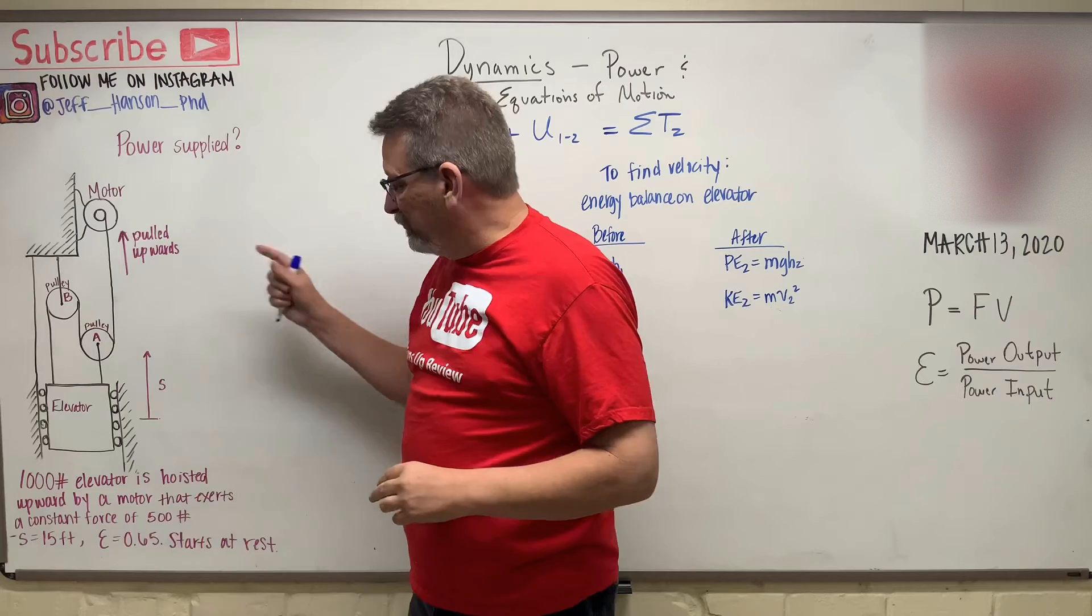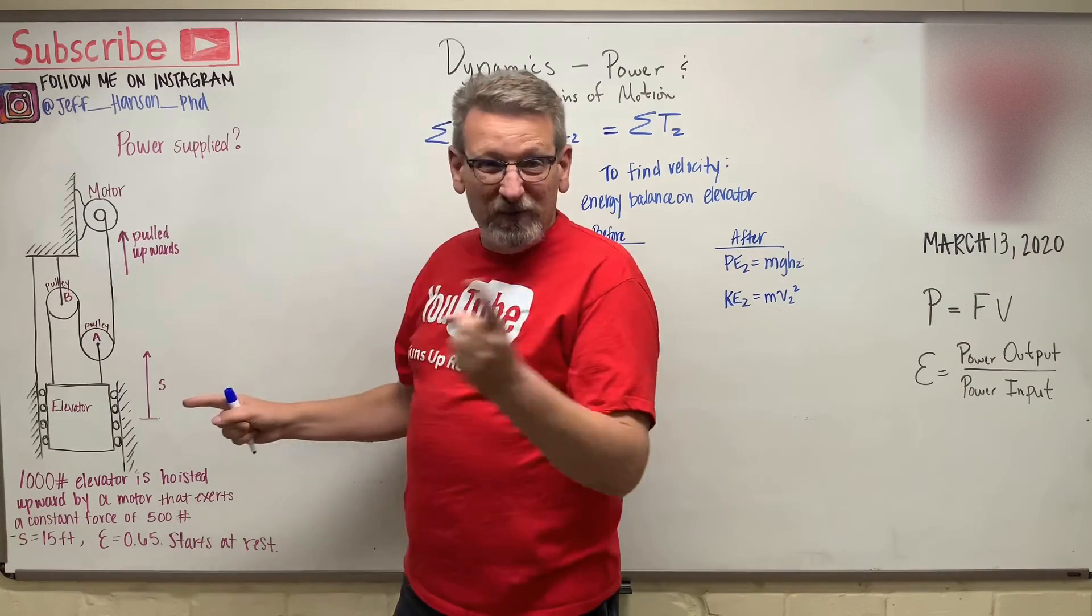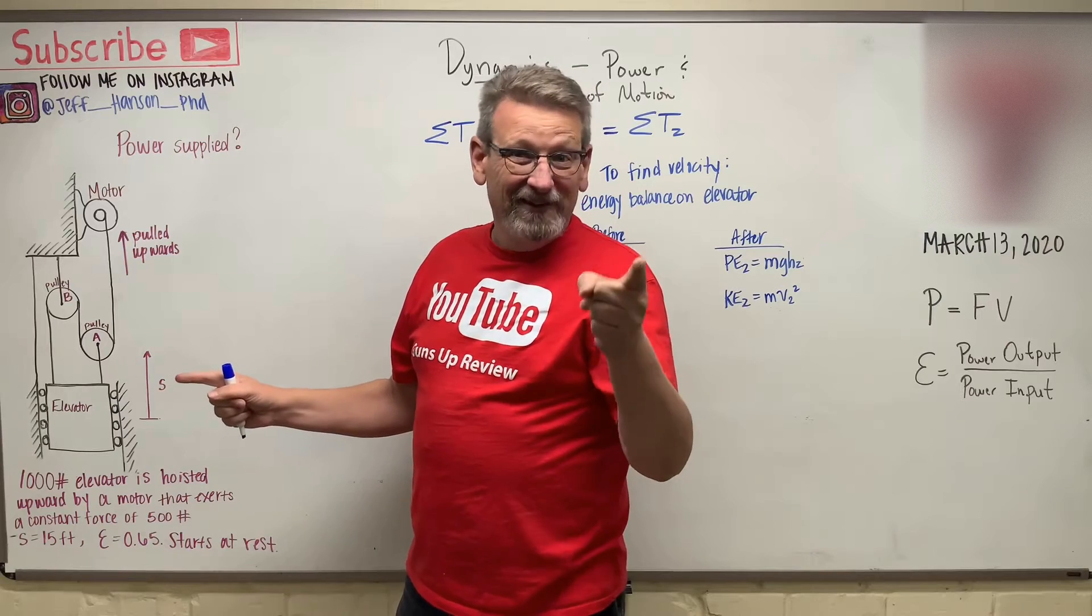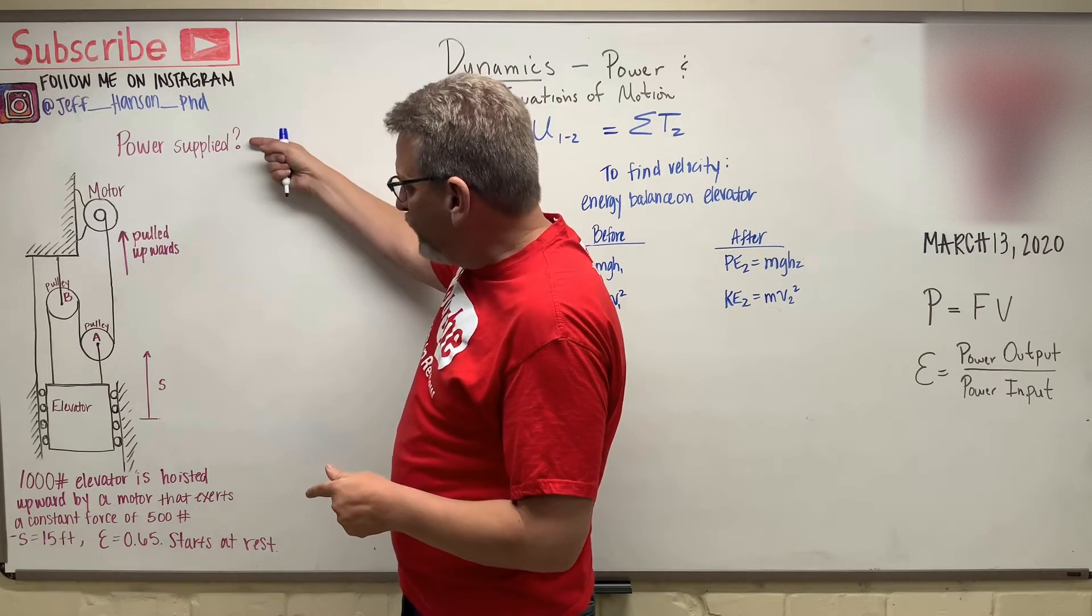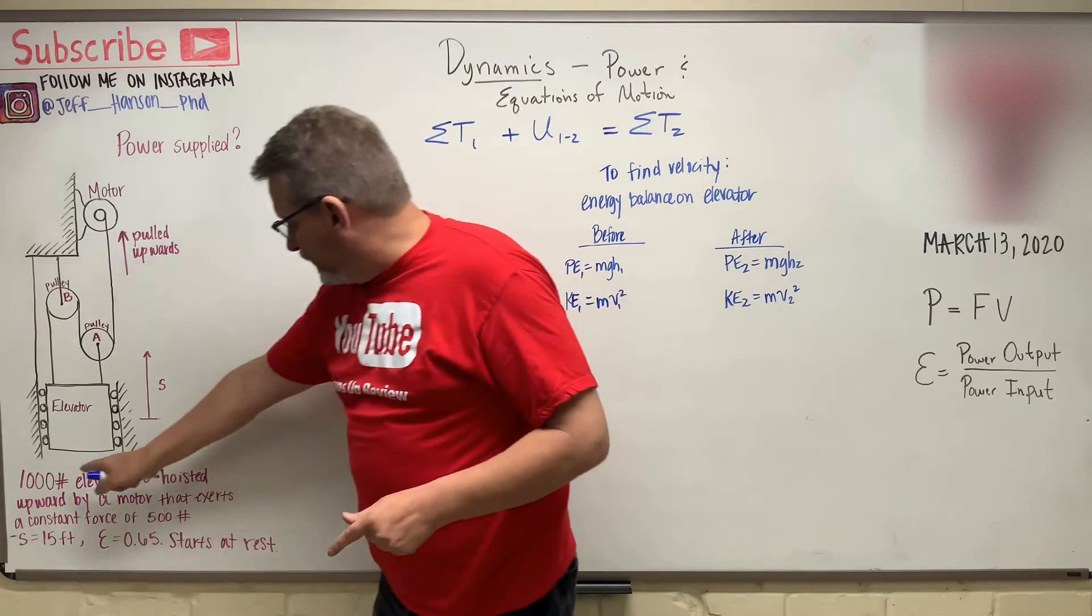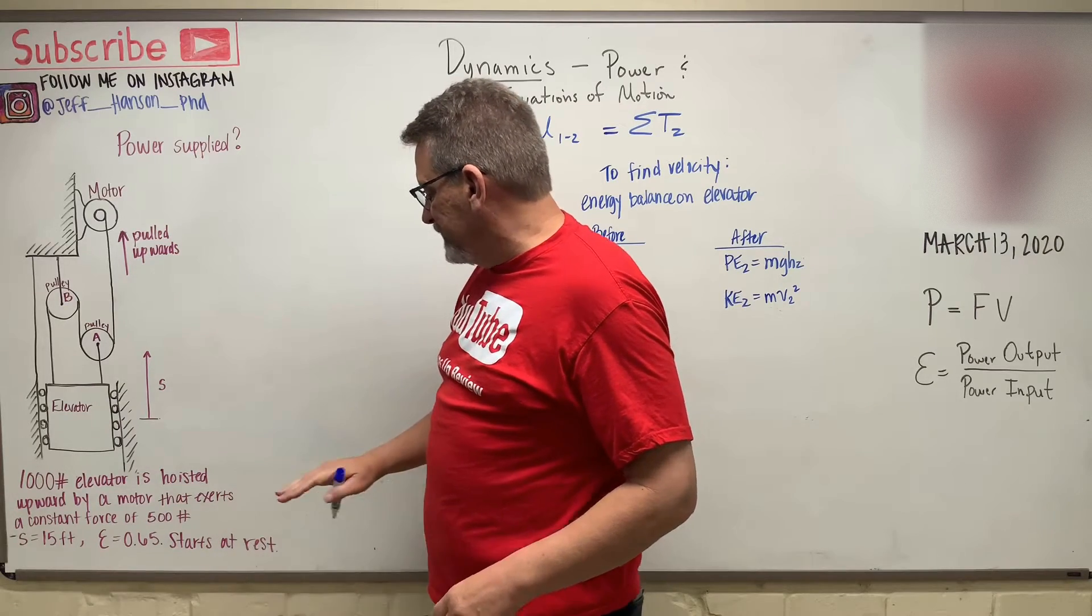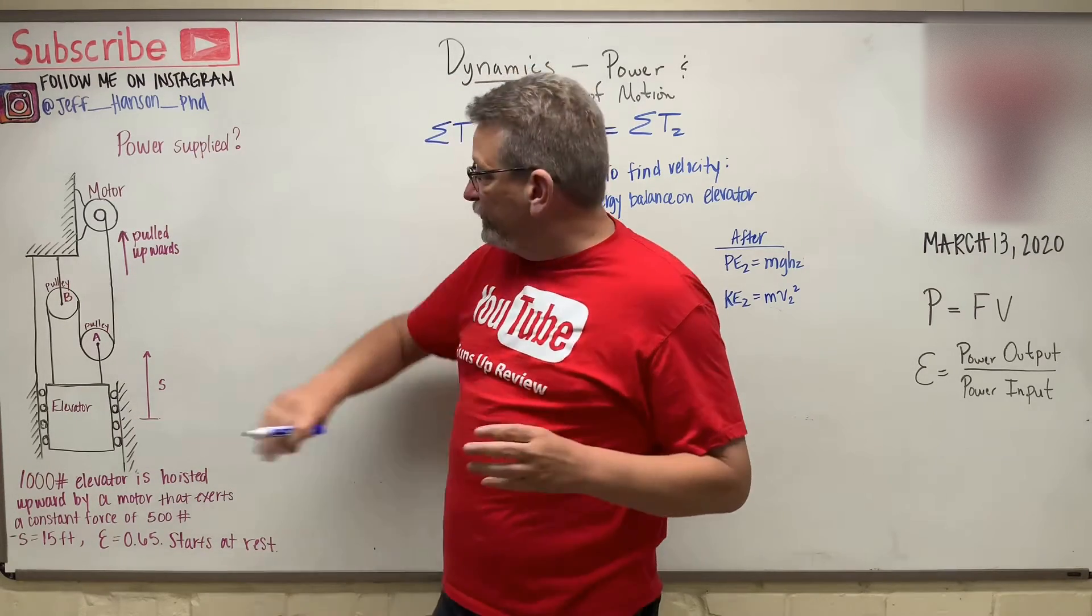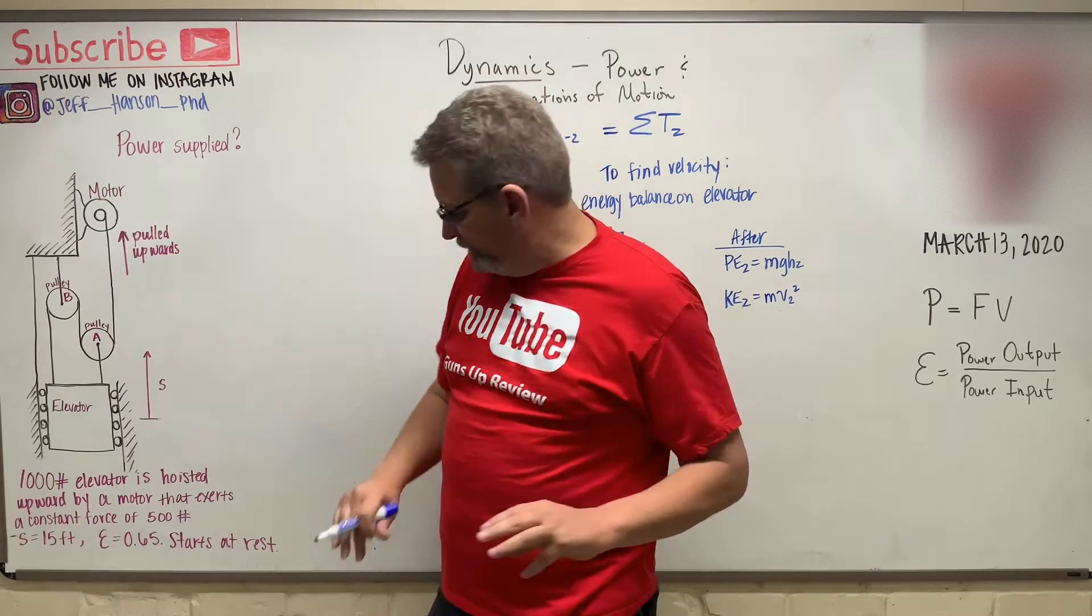Now you can tell my good friend Natalie has been here because her drawings are way more beautiful than mine. So if you're ever seeing drawings on the channel that are really good, think Natalie. So we're looking for the power supplied to raise that elevator. The elevator weighs 1,000 pounds, and it's hoisted upward by a motor that exerts a constant force of 500 pounds. So we know the force in this cable is 500 pounds. It's given.